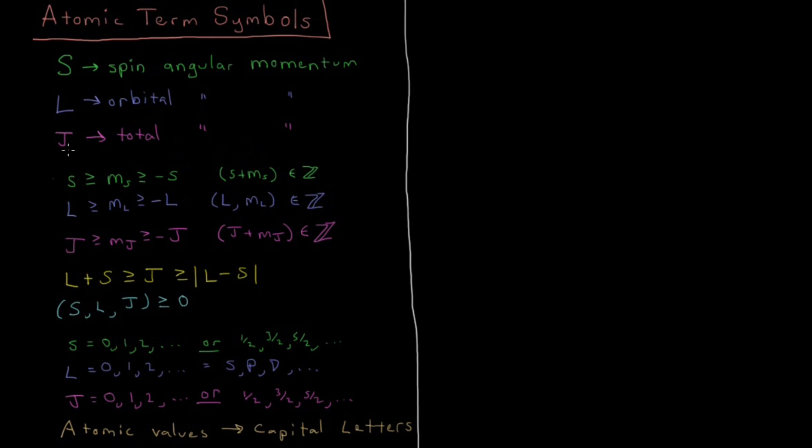So S, just like little s, which we would have for a single electron, also has a component in the z direction called m sub s. The value of m sub s is restricted based off of the value of s to be anywhere between s and minus s, and the sum of those two would have to be an integer.